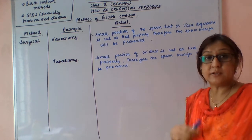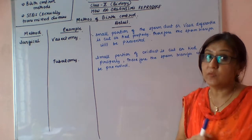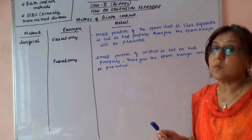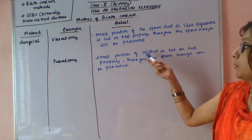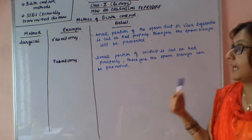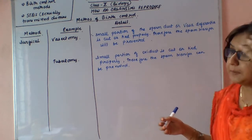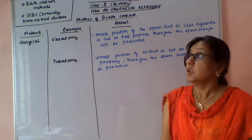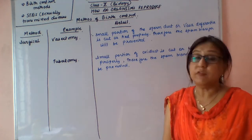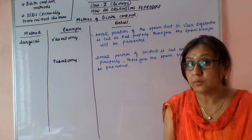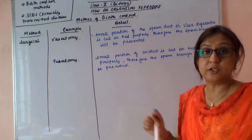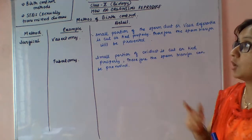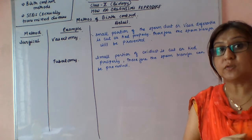In females, the surgical method is tubectomy. In the fallopian tube or oviduct, fertilization normally takes place. In tubectomy, a small portion of the oviduct is cut and tied properly, so fertilization cannot take place and sperm transfer is prevented. A diagram of vasectomy and tubectomy will be shared as an image.